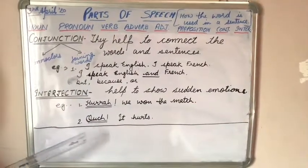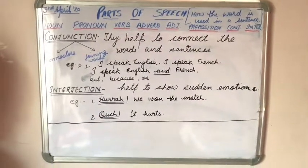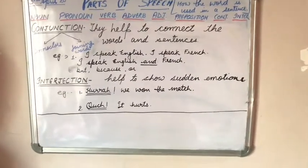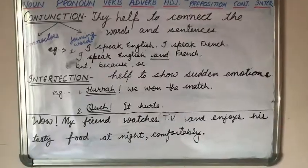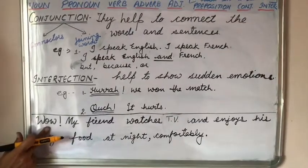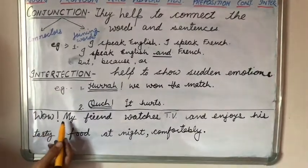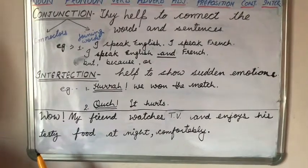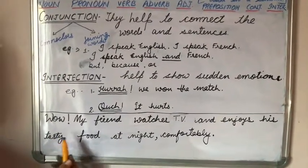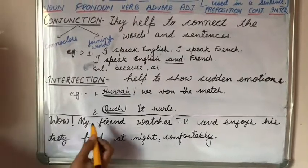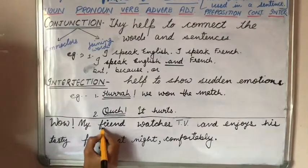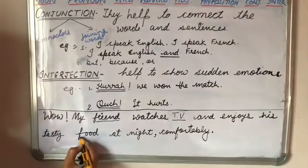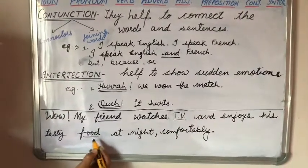That's all about the parts of speech. Now I am writing an example for you in which I will show all the parts of speech. Here is our example, children. Let's find out all the parts of speech in this example. First, we will find out the nouns. The nouns are: friend, TV, food, and night.